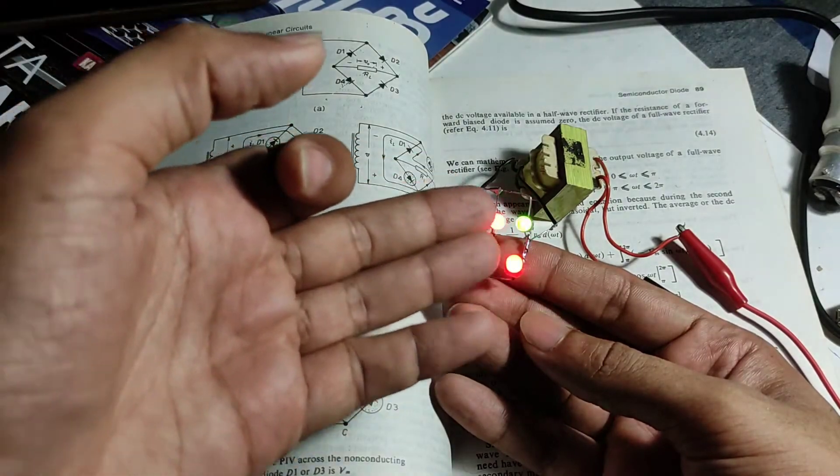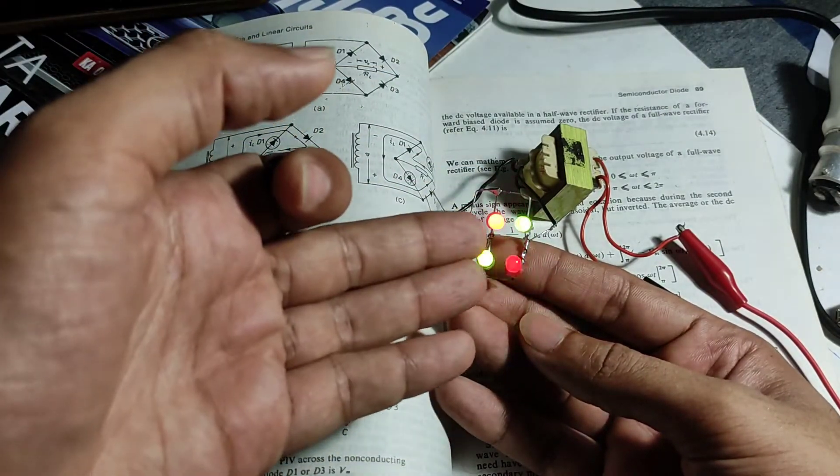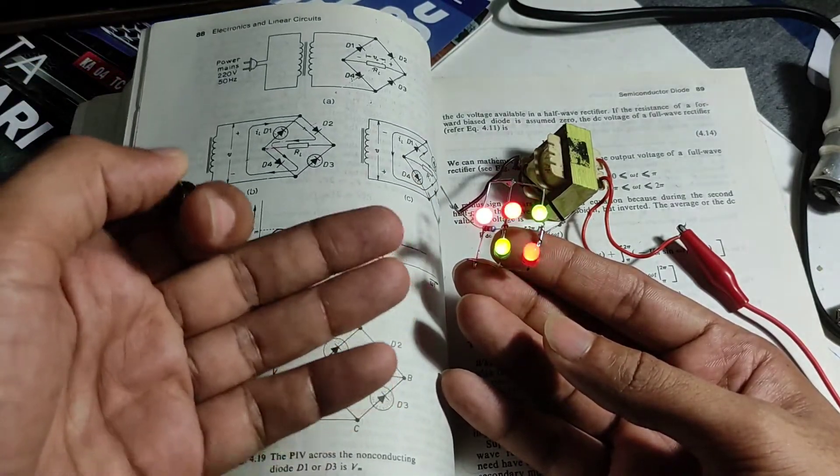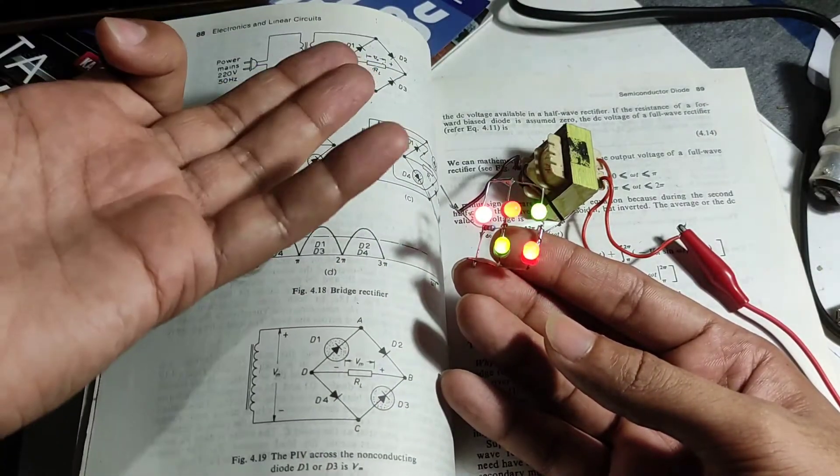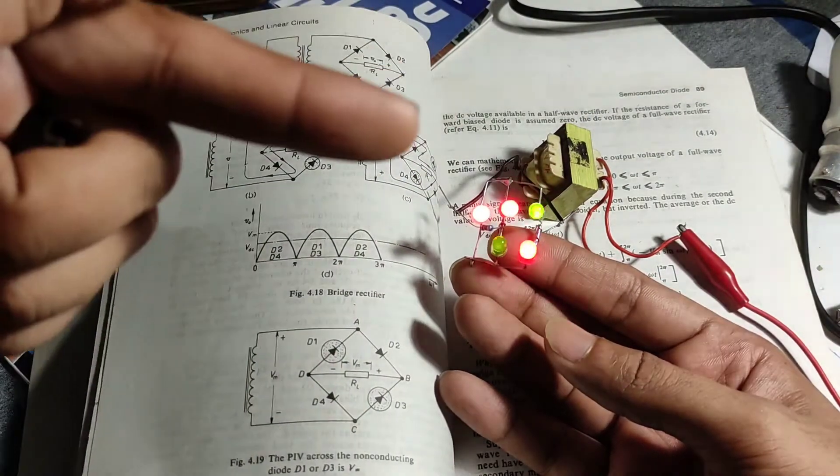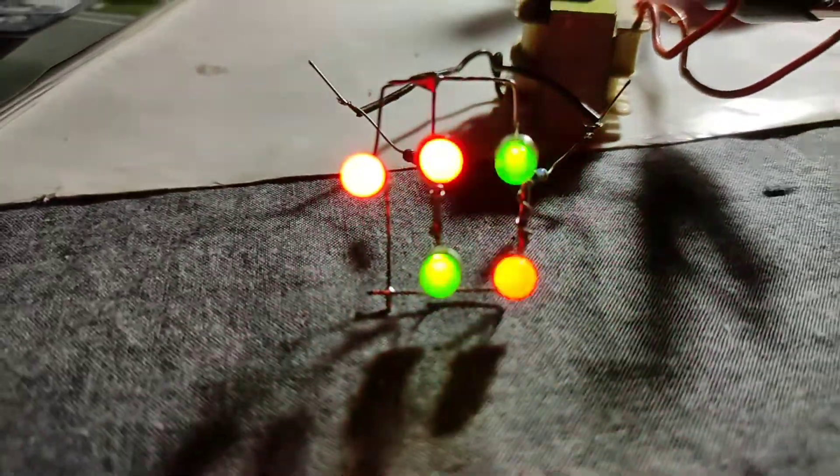Now what I'm going to do is slow it down so we are going to see which of the diodes are going to be turned on, which of them are going to be turned off, and we are going to see whether the working is exactly like how it was mentioned in the textbooks.